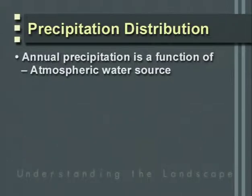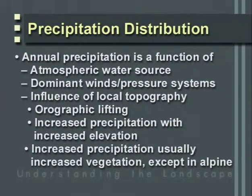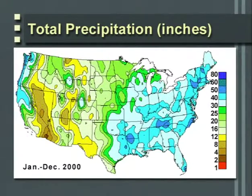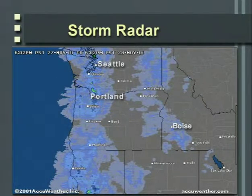Annual precipitation is a function of atmospheric water source availability. Increased precipitation is often near the coasts, where there's a large source of water for evaporation. It's influenced by topography and dominant winds and pressure systems. Orographic lifting — that is, the increase in precipitation associated with an increase in elevation — is visible in these figures. With radar, we can look at individual storms in real time, whether high intensity, long duration, or very localized.